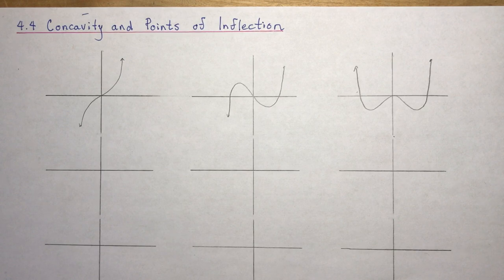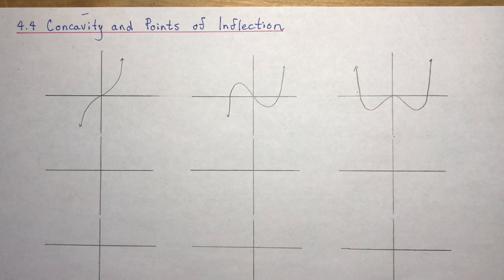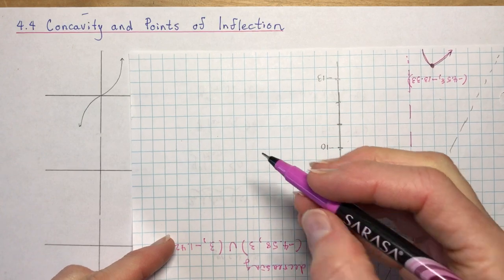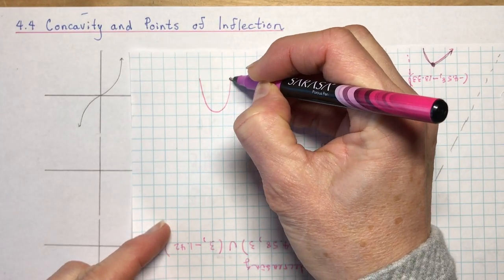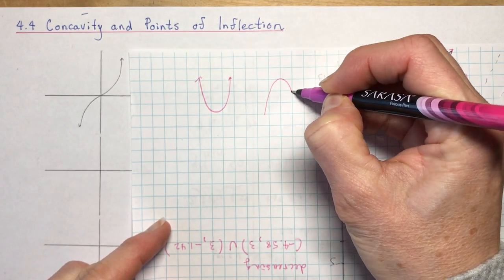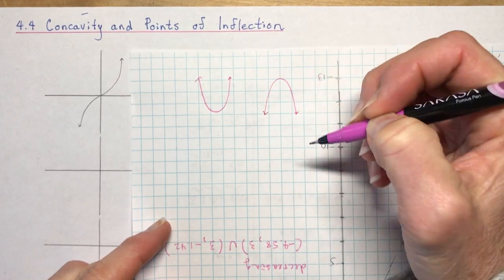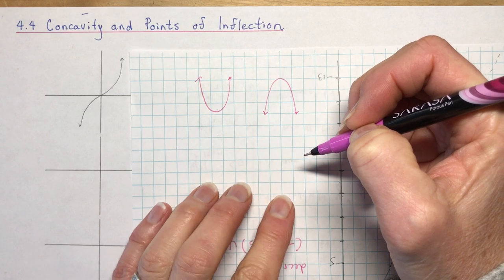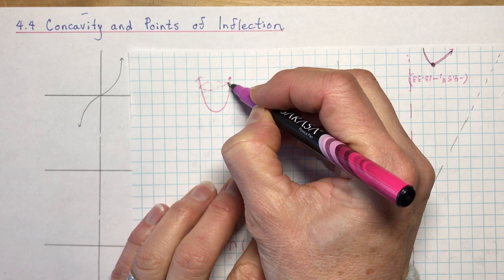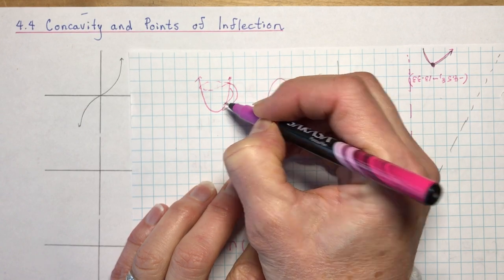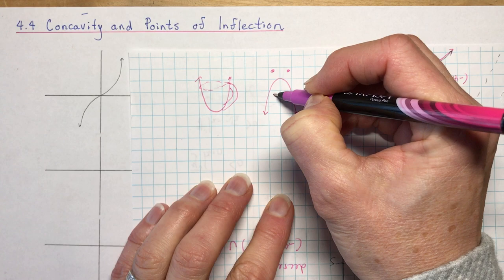First we need to talk about what concavity means. You probably remember from grade 10 we talked about parabolas being concave up or concave down. In my class you would have learned that concave up means 'past the cup' — because it looks like a cup. And concave down — why the frown?